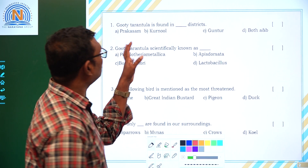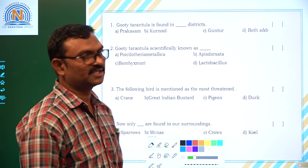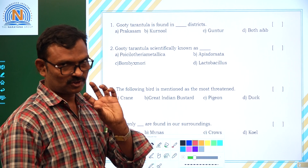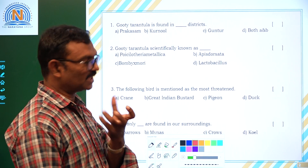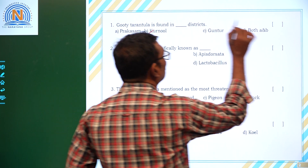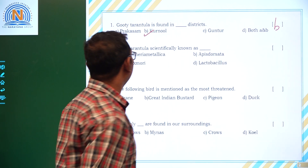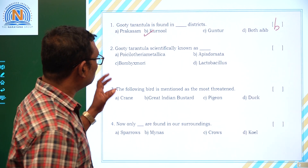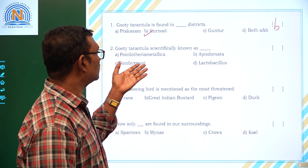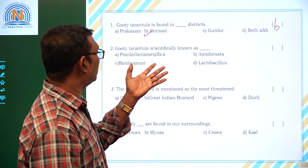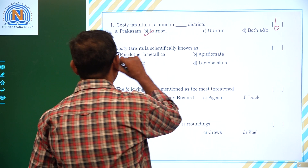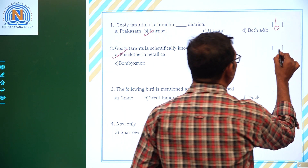Question: Gooti Tarantula is found in which districts? Gooti Tarantula is a spider — a blue-coloured spider. It is found in Kurnool district. The answer is Option D. Gooti Tarantula is scientifically known as Poikilotheria metallica. Option D.